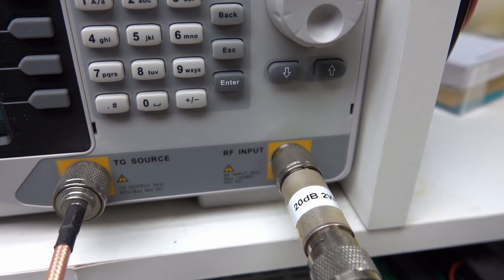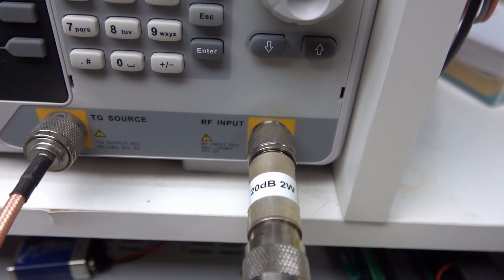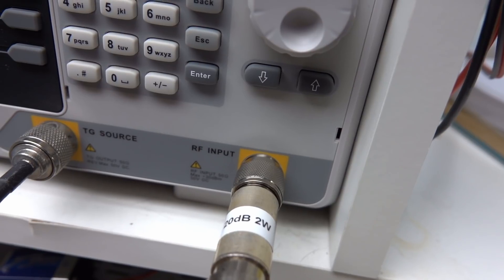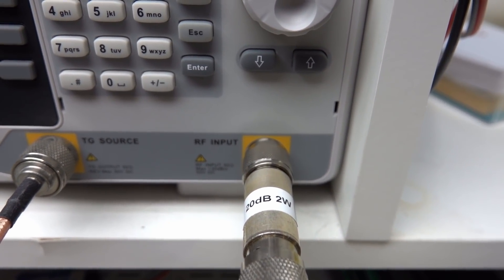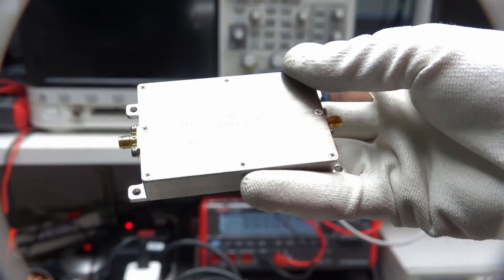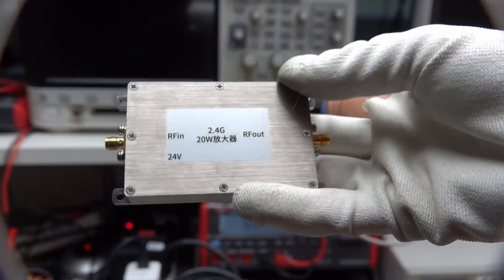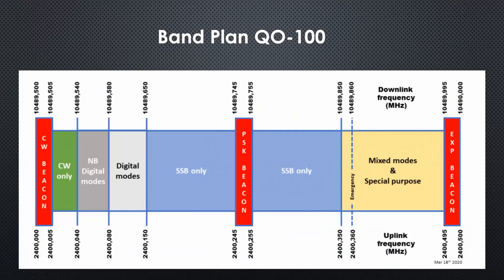Anyway, it is good practice to add an attenuator. I have here one for 20 dB and 2 watts. So no problem for the Pluto measurements. For sure, an issue for the 20 watts of the amplifier later on.